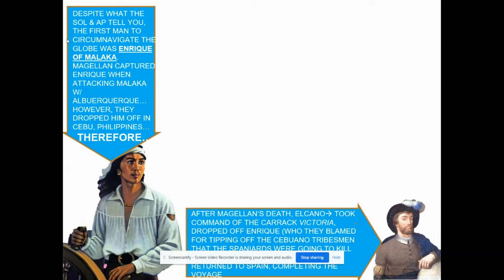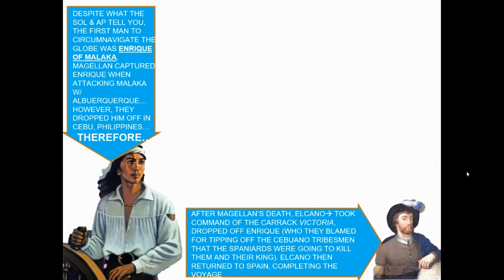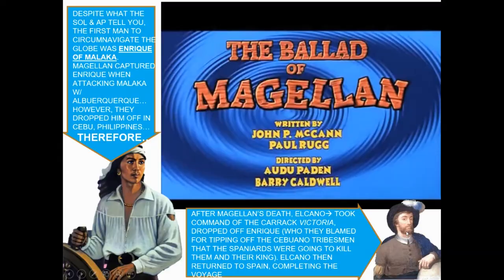After Magellan's death, Alcano took command of the Carrack the Victoria, which was the ship they were on. They dropped off Enrique, who they blamed for tipping off the events leading to Magellan's death. Alcano then returned to Spain, completing the voyage. So his ship did make it across, but Magellan himself, unfortunately, did not.